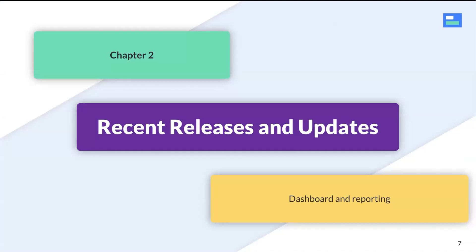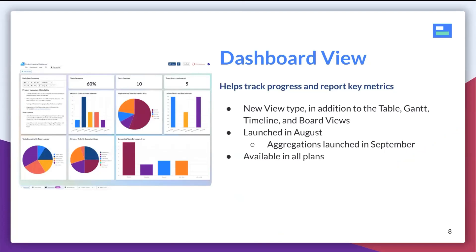Segueing into our recent releases — what is the dashboard and reporting suite we launched back in August? The dashboard view is a series of widgets and reporting tools that help you track progress and report key metrics on your project data in Visor. It's a new view type in addition to the table, Gantt, timeline, and board views we already have. One major update was going from just counting records to being able to summarize across all numerical data — whether that's budgetary data like dollars or estimated hours. The dashboard view is currently available across all plans: free, pro, and ultimate.